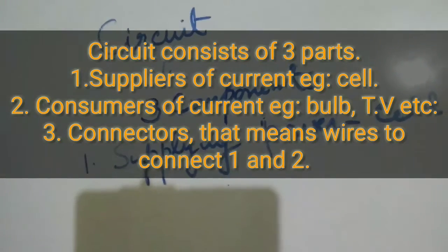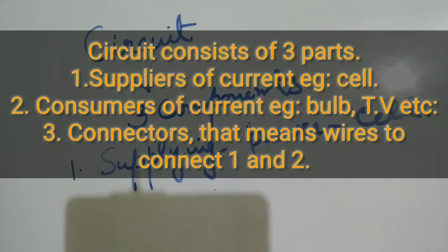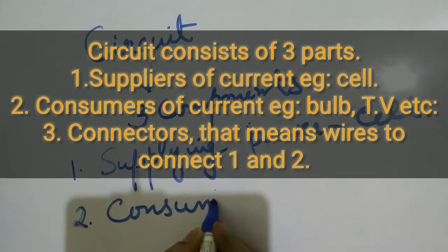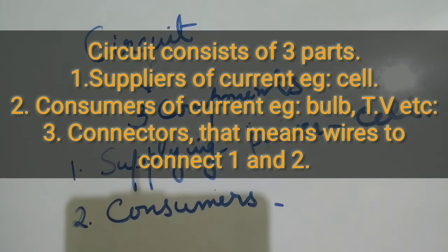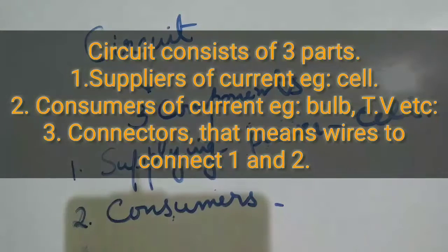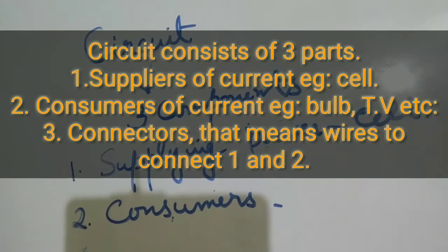If there is a supply, somebody is there to receive it. That is consumers. Consumers means either bulb, TV, PC, AC, etc. So many appliances we are connecting with the circuit — they are called consumers. And in order to connect these two, suppliers and consumers, we need some connecting wires. So these are the main three components that come under the circuit.